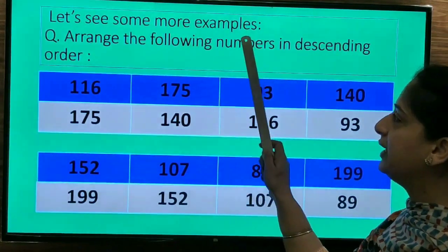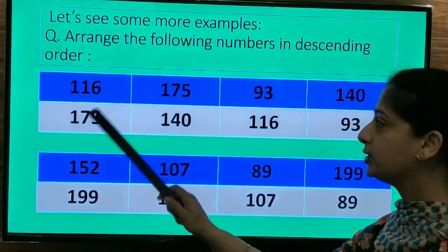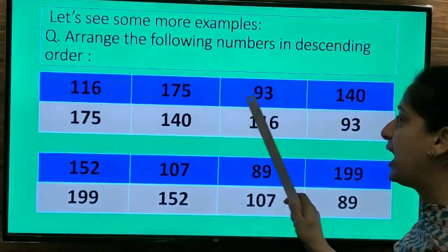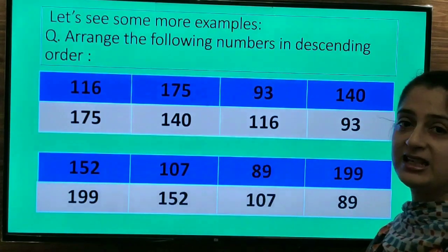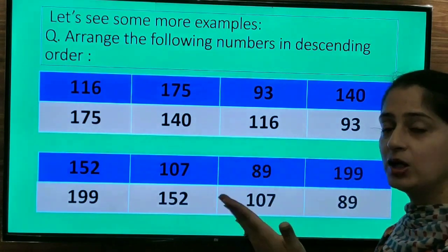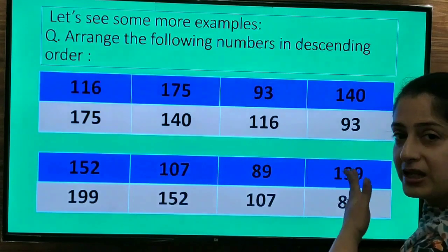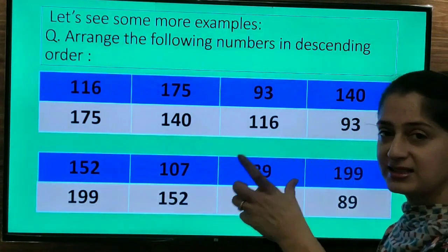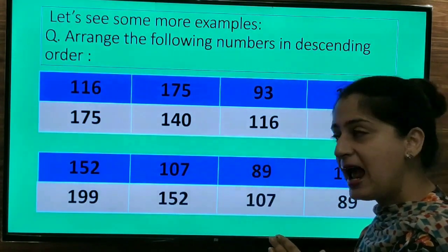Let's see some more examples. Arrange the following numbers in descending order. The first number is 116, 175, 93 and 140. Now here we will see the numbers according to their digits. In ascending order, we choose the numbers from the smallest to the biggest. Now here in descending order, we are going to choose the biggest number first. And we are going to place the smallest number in the end.